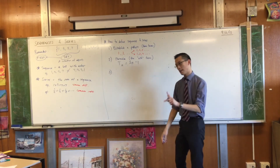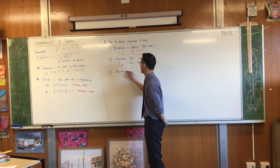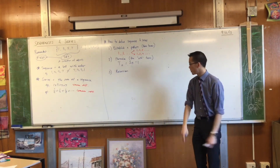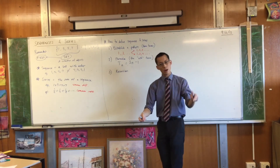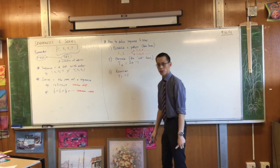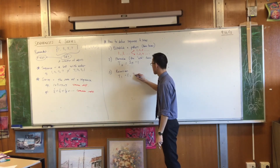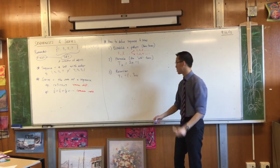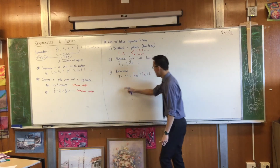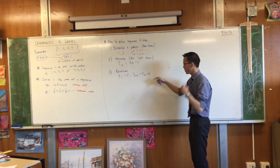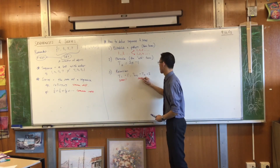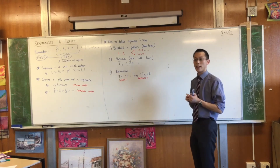There's one last way, which is through what we call a recursion. A recursion is very similar to the formula idea, but instead of going straight to the nth term, you say: just tell me the start and tell me how to keep going. For example, coming back to 1, 3, 5, 7: term 1 is 1, and then to get to the next term, you just take your previous term and add 2. So you know where you start and then you know how to keep going.